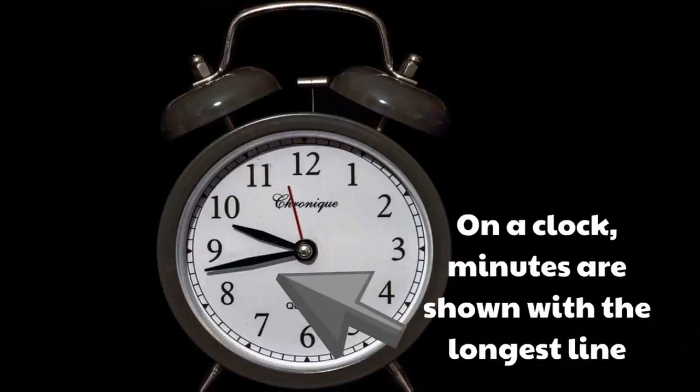On a clock, minutes are shown with the longest line. So when you look at a clock, the longest line called a hand on a clock. That longest hand measures the minutes.